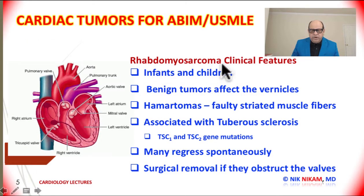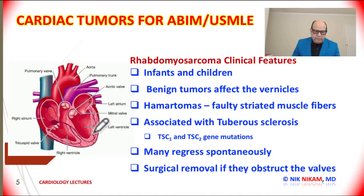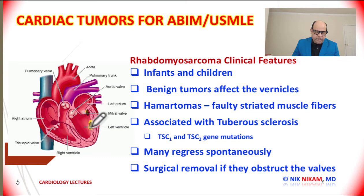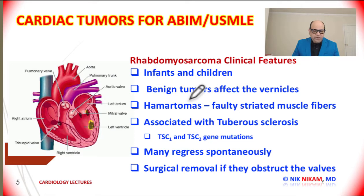Let us talk about rhabdomyosarcoma, which is more common in infants and children. It is a benign tumor that generally affects the ventricles. These rhabdomyosarcomas are basically a fault in the development of striated muscle fibers that line the ventricles. They can develop as masses inside the left ventricular or the right ventricular cavity, and sometimes they can develop near the valves and cause valvular problems. These tumors are also associated with tuberous sclerosis — a TS1 or TS2 gene mutation. Many of these tumors regress spontaneously and do not need any specific treatment unless they are close to the heart valves and interfere with valve function. This is a tumor, rhabdomyosarcoma, seen in infants and children.